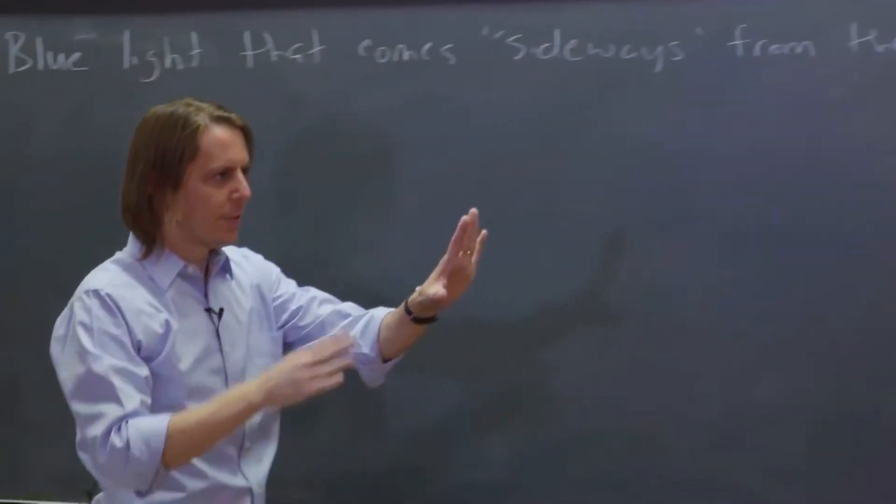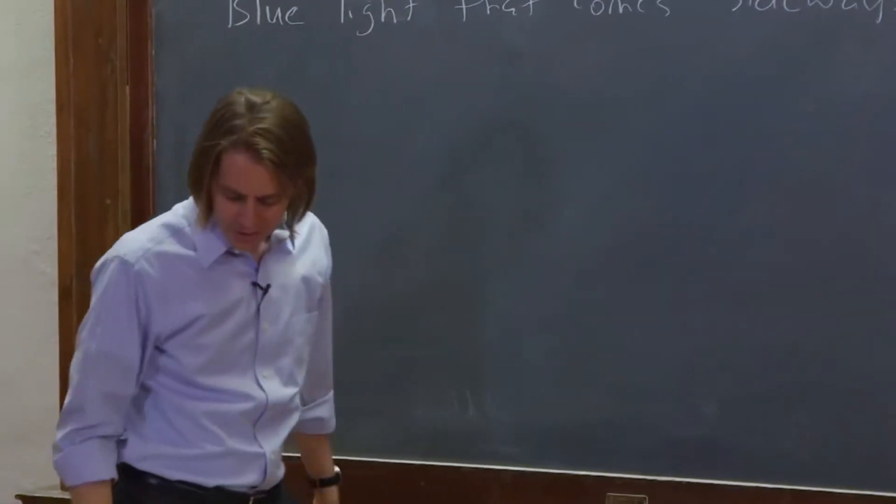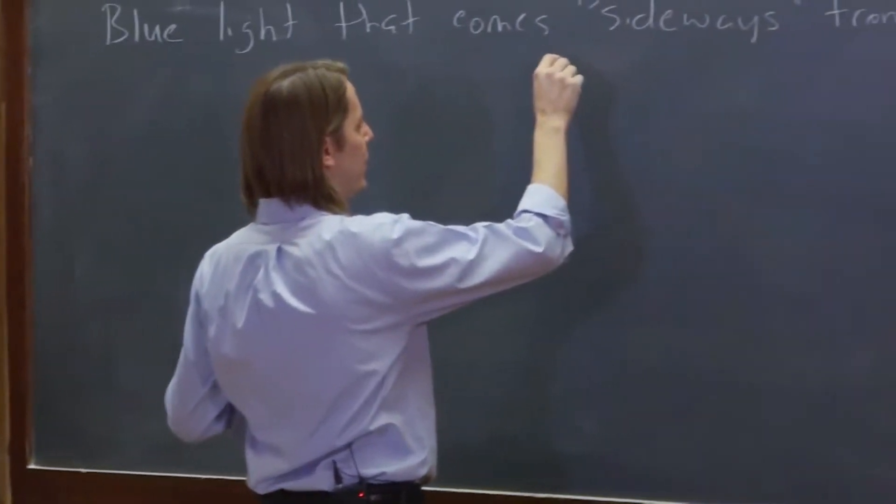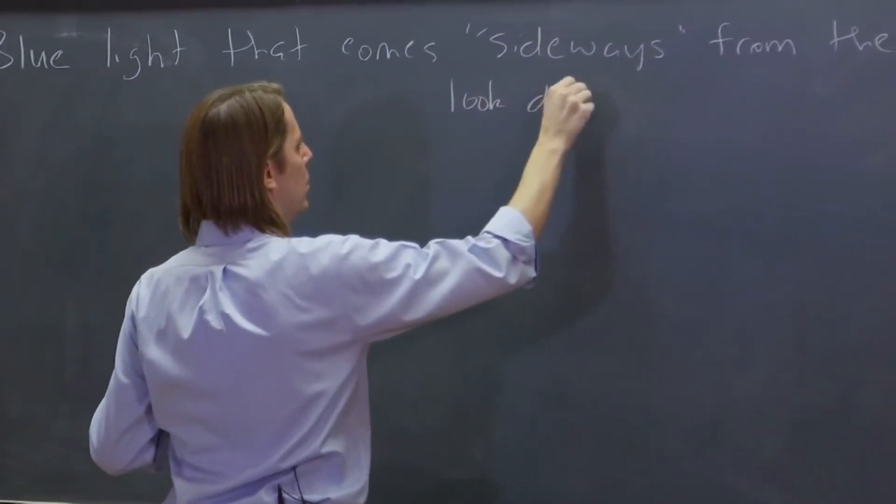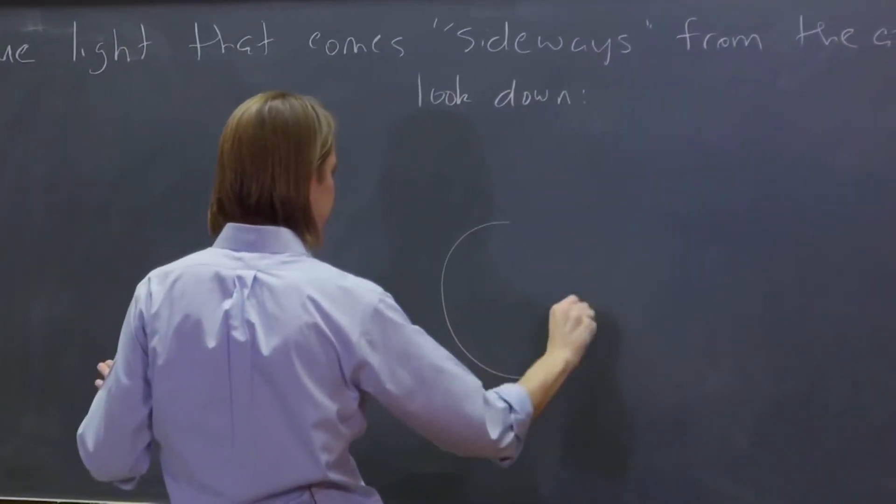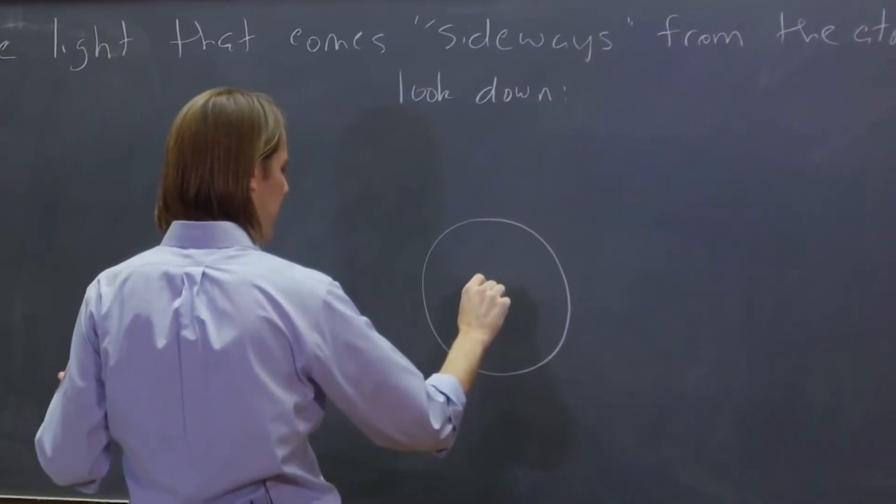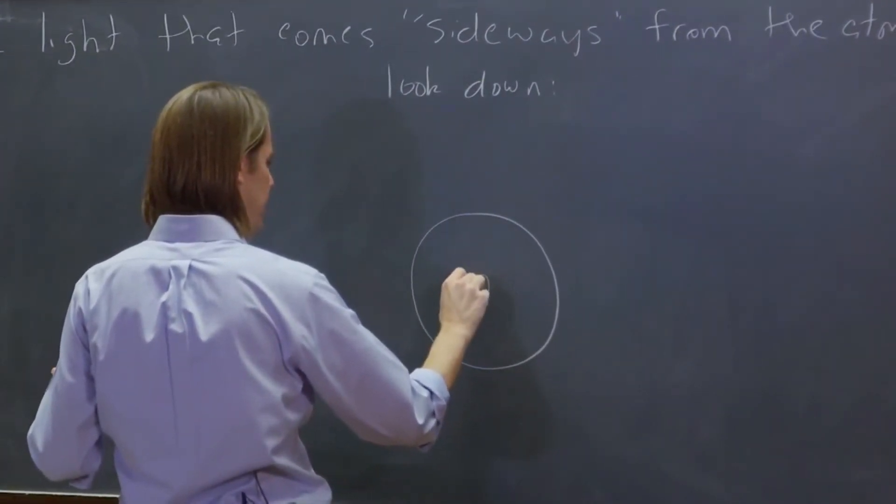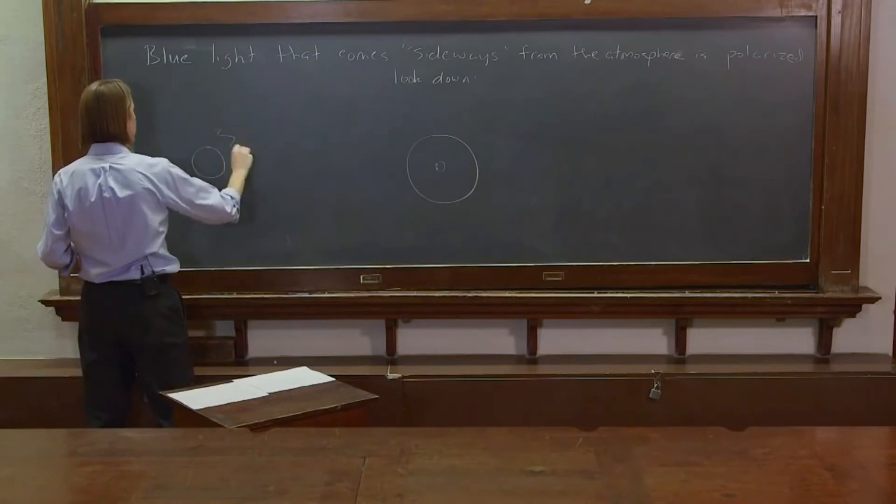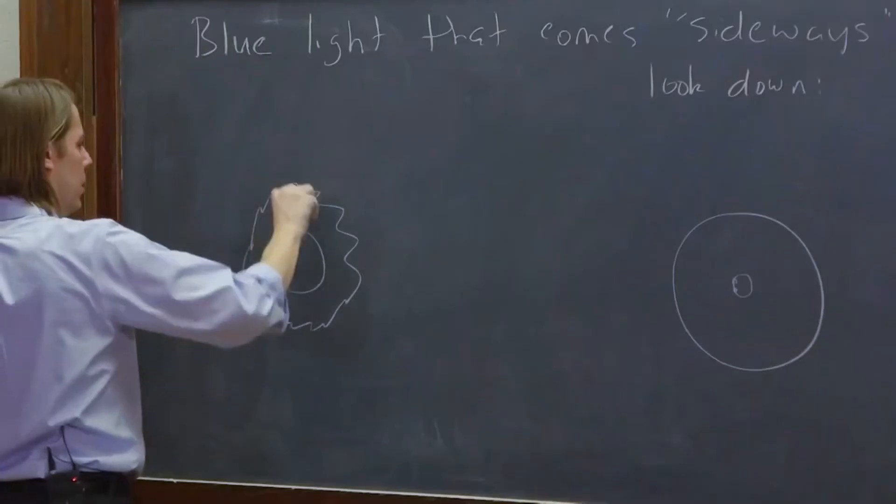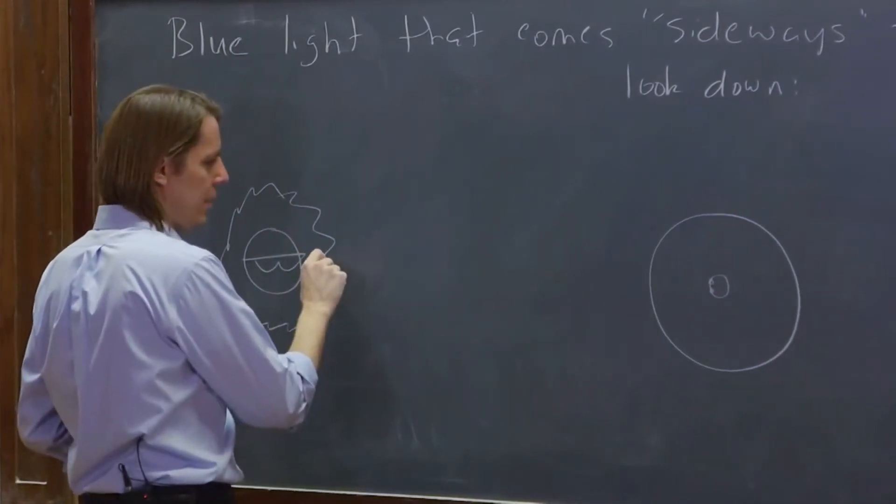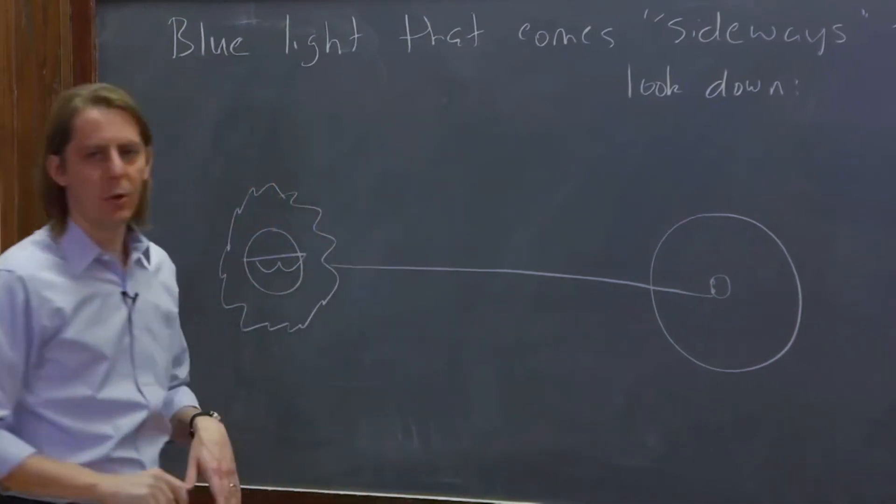And by sideways, I mean sideways from the sun. You'll see what I mean as we describe it. So for this one, we're going to look down on the earth. Okay. So here is the earth, and here you are. Let's see. So there is your head, and there's your two eyes, right there. You're on the earth. You're looking out here. Here's the sun.